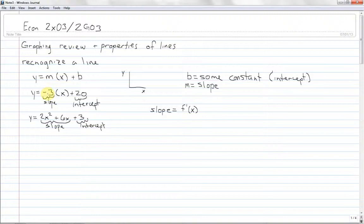So in my first equation here, where I had negative 3x plus 20, well, f prime of y is negative 3, and interestingly enough, that's what I labeled as the slope. In the second example, the slope of the line, f prime of y, or f prime of x, I should stop doing y, is 4x plus 6.